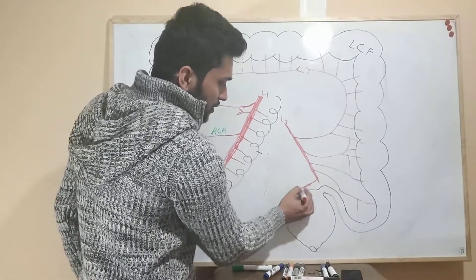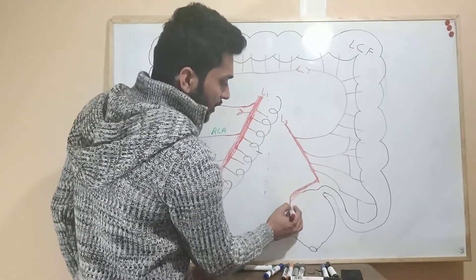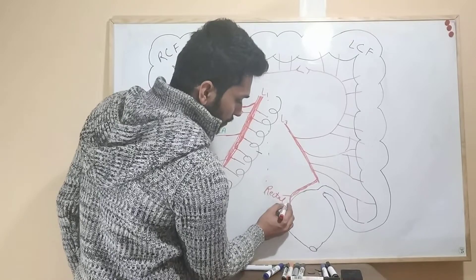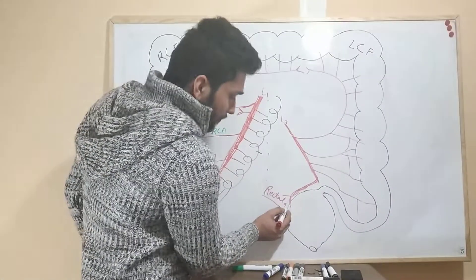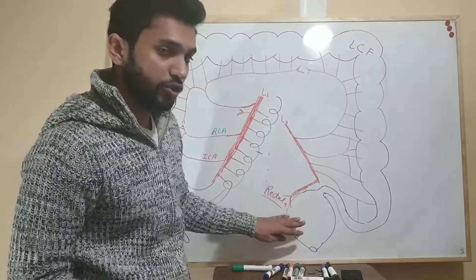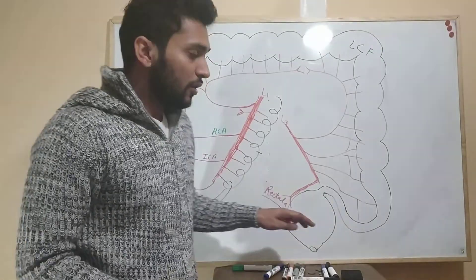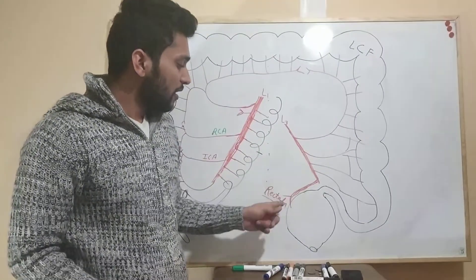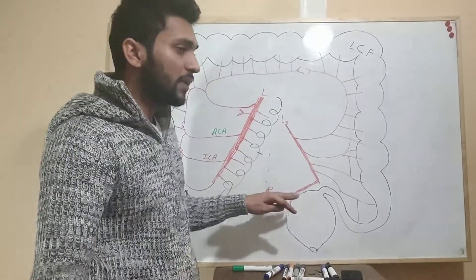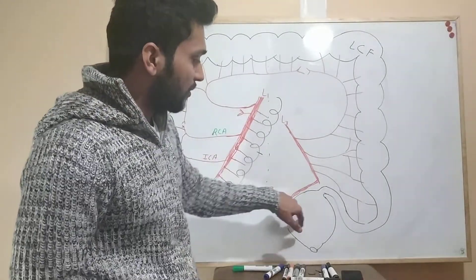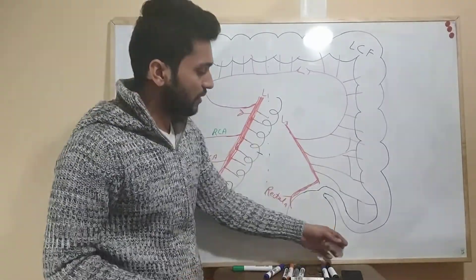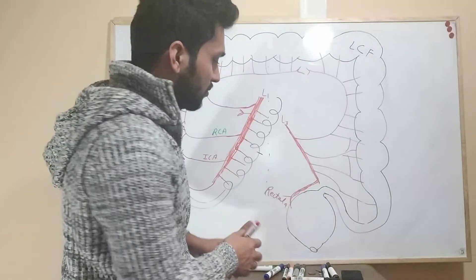There is an important anastomosis between the middle colic artery and the left colic artery, called Riolan's anastomosis. One artery also gives blood supply to the rectum — this artery is called the superior rectal artery. Regarding the rectum, three arteries supply it: one superior, one middle, and one inferior. Only the superior rectal artery comes from the inferior mesenteric artery; the middle and inferior rectal arteries come from other branches, which will be discussed in the next video.